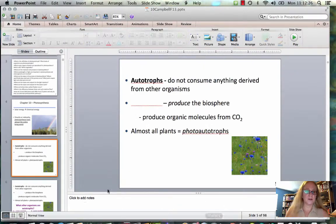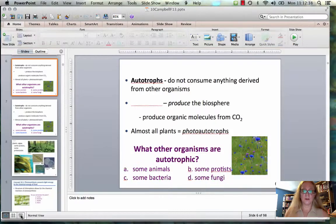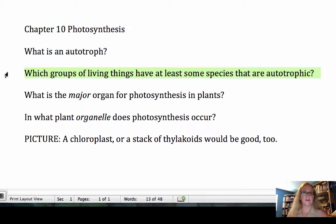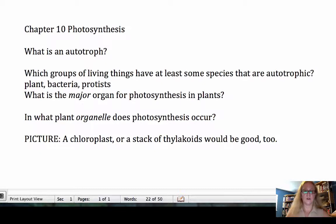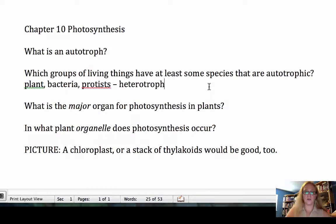Let's go back and review the lecture notes. There was a clicker question: What other organisms are autotrophic? That seems like it could be a really good exam question. We might write: What groups of living things have at least some species that are autotrophic? From lecture you'll have learned that plants, some bacteria, and also protists — three major groups — all have autotrophic forms. The contrasting term is heterotroph: organisms that consume other living things. All fungi and all animals are heterotrophs.